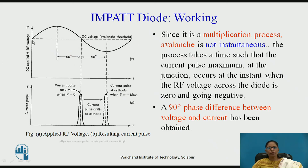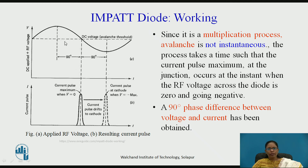To explain further: a high reverse bias DC plus a small amount of RF is applied. Due to impact ionization, an avalanche current pulse is produced inside the wafer, but this pulse will not appear at the point when the voltage is positive. It will appear at the point when the voltage is zero, because avalanche is a multiplication process and it is not instantaneous — the process takes time. The current pulse is maximum at the junction at the instant when the RF voltage across the diode is zero or negative. So we get a 90-degree phase shift between voltage and current. However, to achieve negative resistance, we need a 180-degree phase shift.